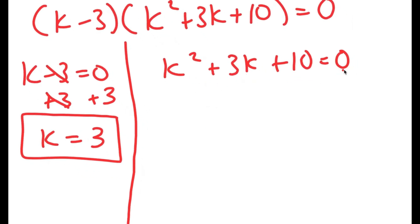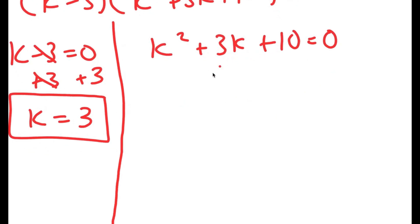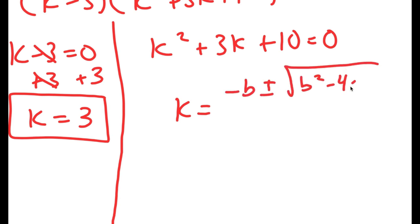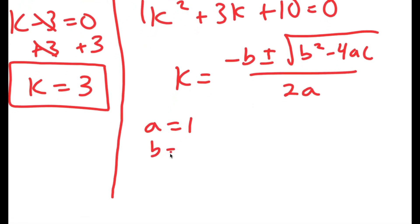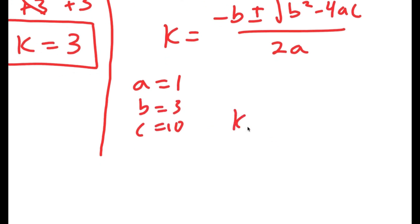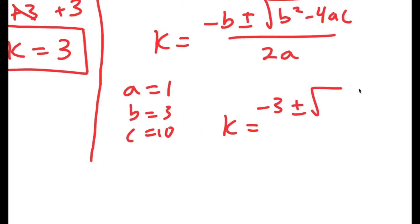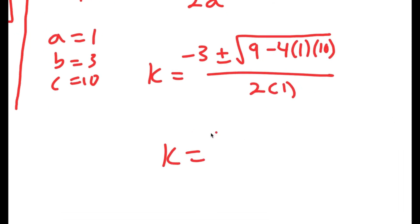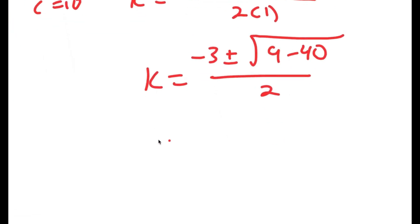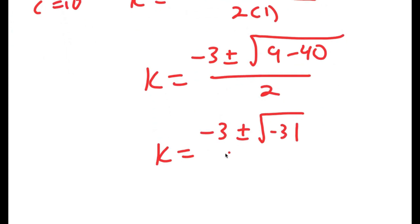For k squared plus 3k plus 10 equals 0, because this is a quadratic equation, I can use the quadratic formula, which is negative b plus or minus the square root of b squared minus 4ac, all over 2a. In this case, a is 1, b is 3, and c is 10. So I get k equals negative 3 plus or minus the square root of 9 minus 4 times 1 times 10, all over 2 times 1. So k is equal to negative 3 plus or minus the square root of negative 31 over 2.